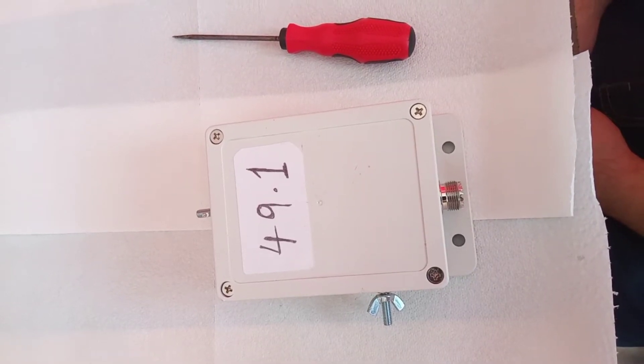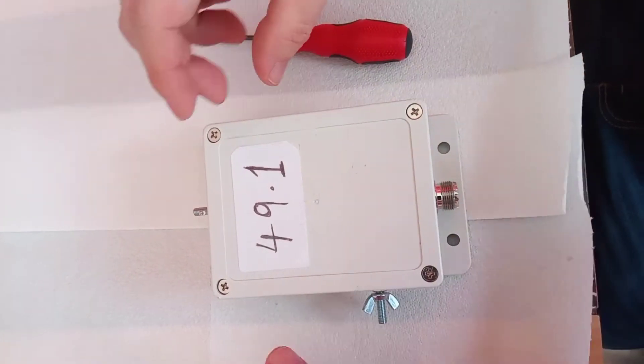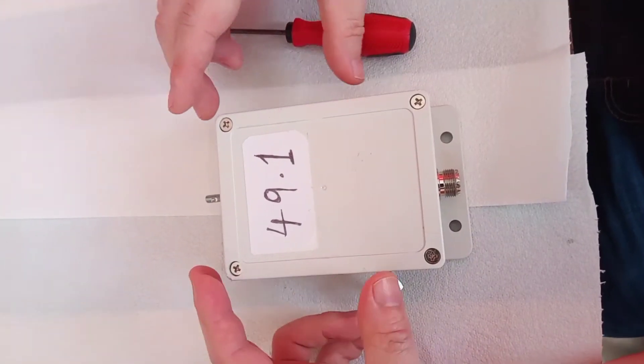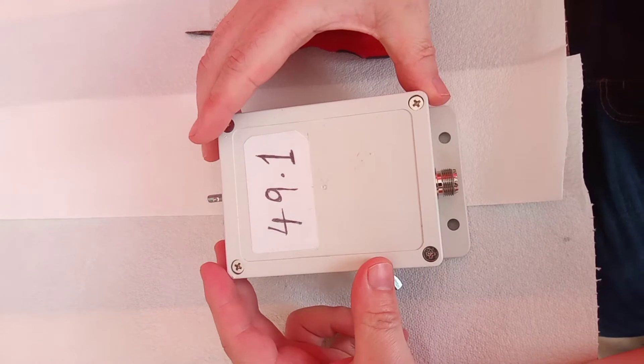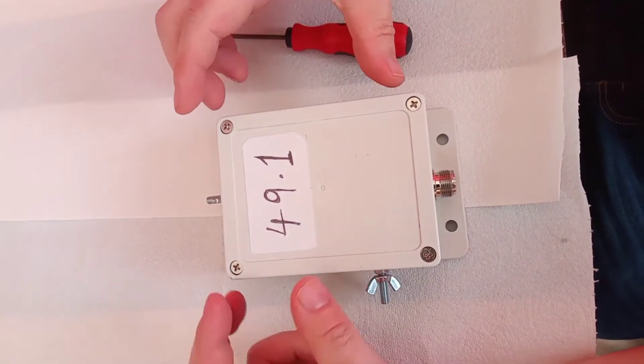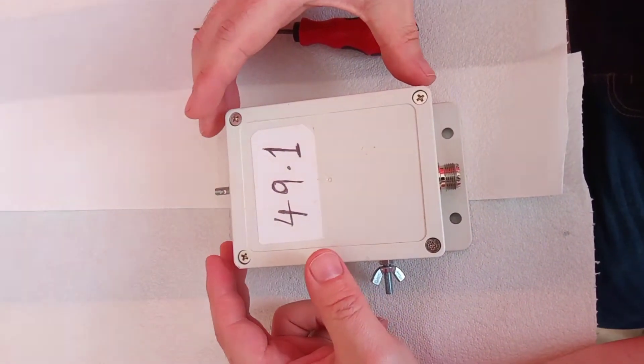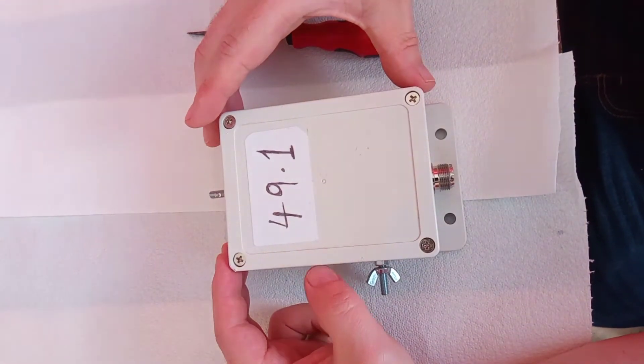Hello, this is Aidan, EI8HJB. Here we have a homebrew 49 to 1. I've been doing a little bit of experimenting with half-wave antenna, especially half-wave on the 20 meter band.